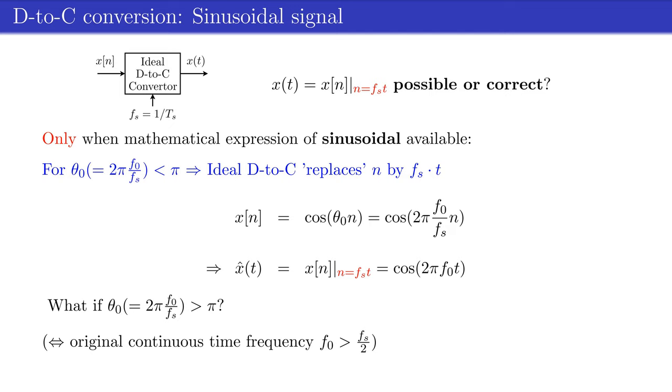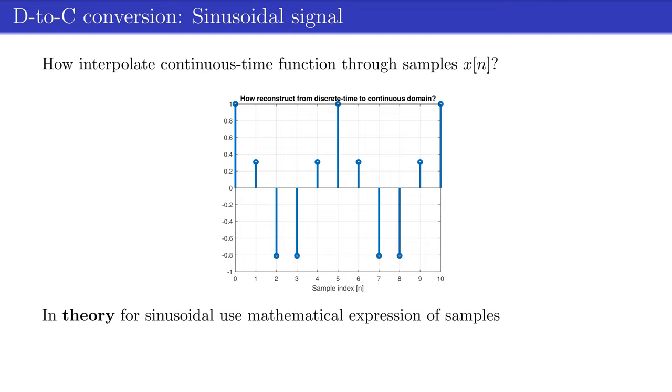In case the relative frequency theta 0 is outside the fundamental interval range, which is the result of a c-to-d converted signal with an absolute frequency f0 larger than fs over 2, the ideal d-to-c converter will use the aliased frequency which is less than fs over 2.